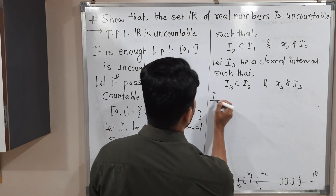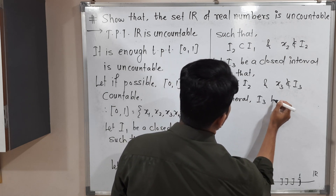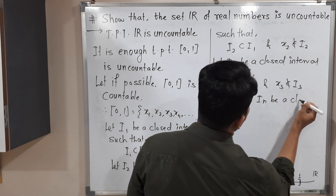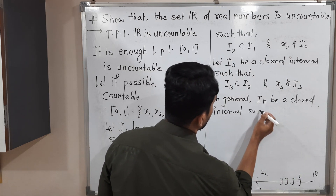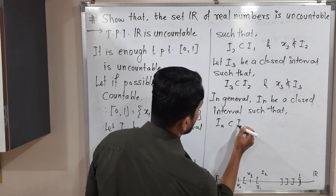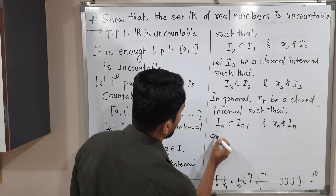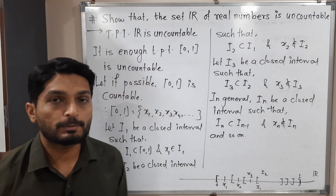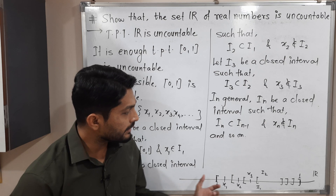In general, let In be a closed interval such that In is a subset of I(n-1) and xn does not belong to In, and so on. I will repeat this process infinitely many times, obtaining a sequence of intervals In.